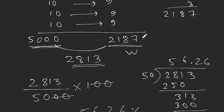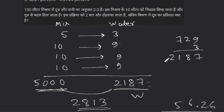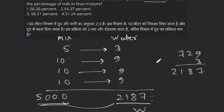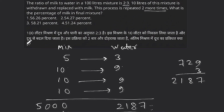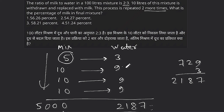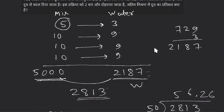So 43-point-something percent out of 100%. This is a better way to solve this question. How much water is changed — first the mixture is 5 parts, water is 3 parts. Then the ratio becomes 10:9, because 10 liters is withdrawn. This process is repeated, so here is the mixture and this is the water. So this is the same approach.